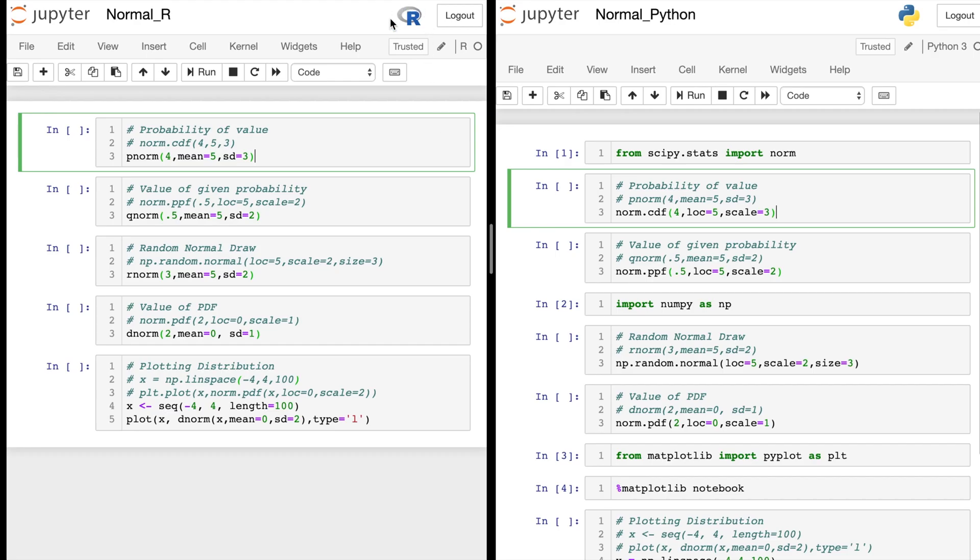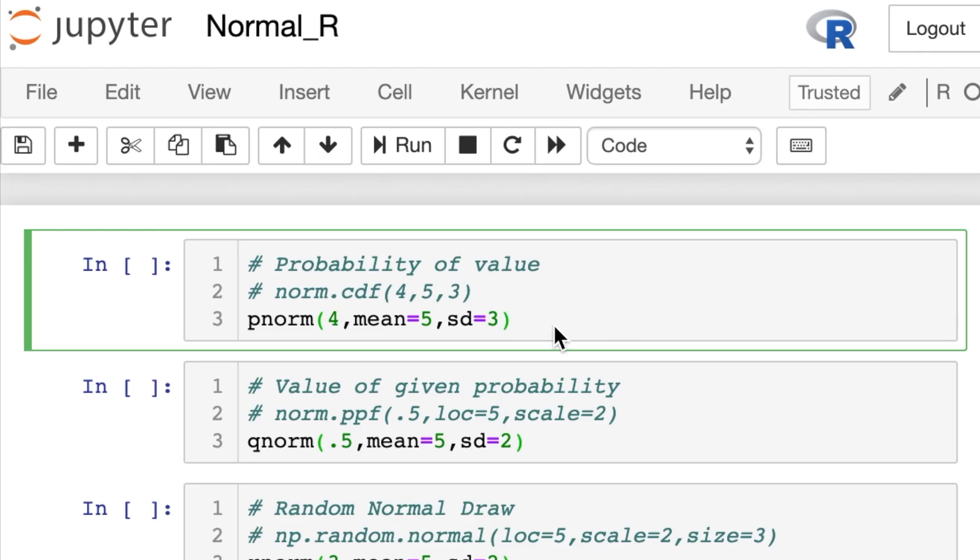Okay, over here on the left side, we have R in our Jupyter Notebook. And over here on the right side, we're going to have Python in a Jupyter Notebook as well. So let's start with R.